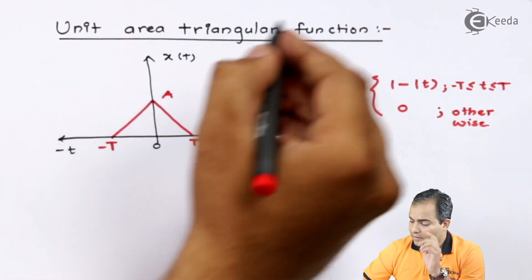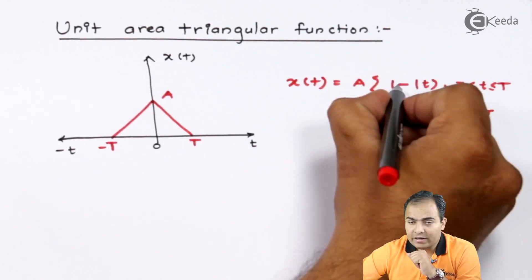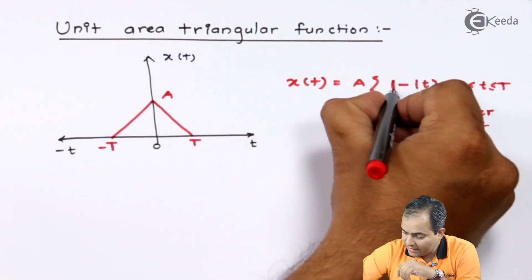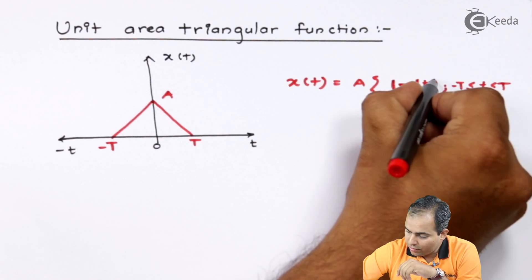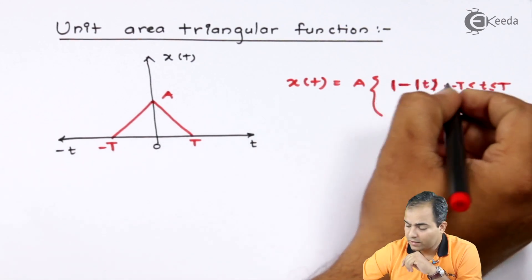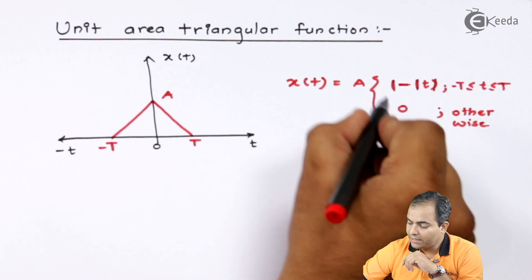What I have written? The amplitude is A in bracket 1 minus mod of t over the range minus t to t and it is 0 for otherwise.